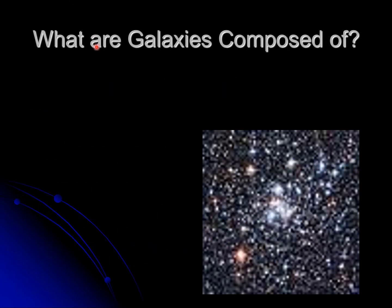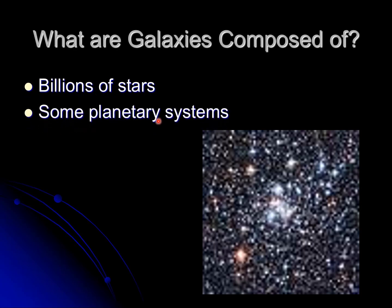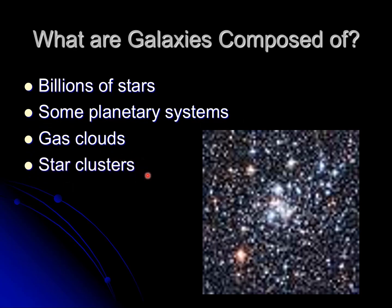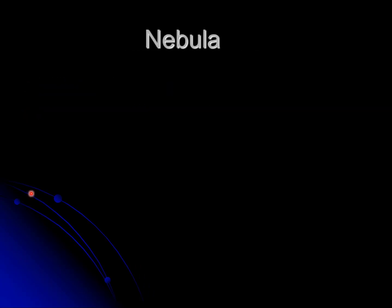What are galaxies composed of? The ingredients of a galaxy include billions of stars, planetary systems, gas clouds, and star clusters.